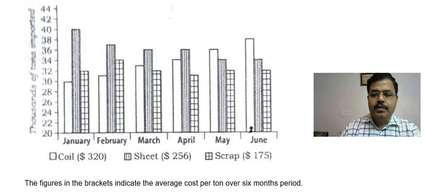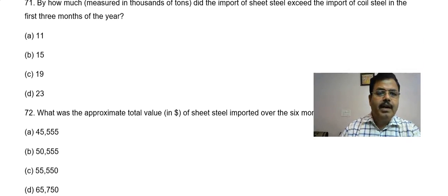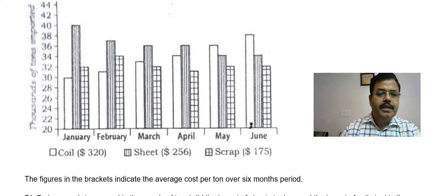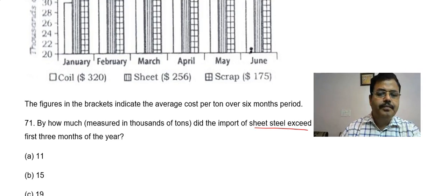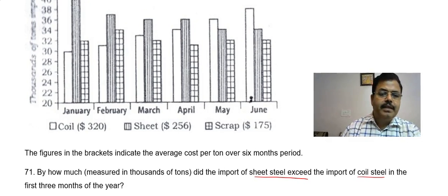First question is: by how much, in thousands of tons, did the import of sheet steel exceed the import of coil steel? The sheet steel exceeded the coil steel, but by how much? That's what you need to calculate.